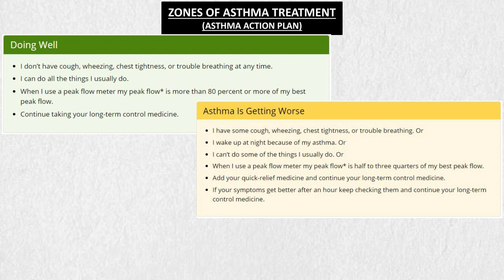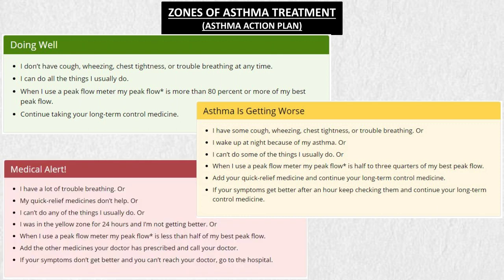In the yellow zone, the patient starts to experience some signs and symptoms, such as chest tightness, trouble breathing, or waking up at night due to asthma, and is not able to do all normal activities. In the red zone — a medical alert — the patient has a lot of trouble breathing and the quick-relief short-acting medications are not working, so the patient is instructed to reach a hospital immediately.